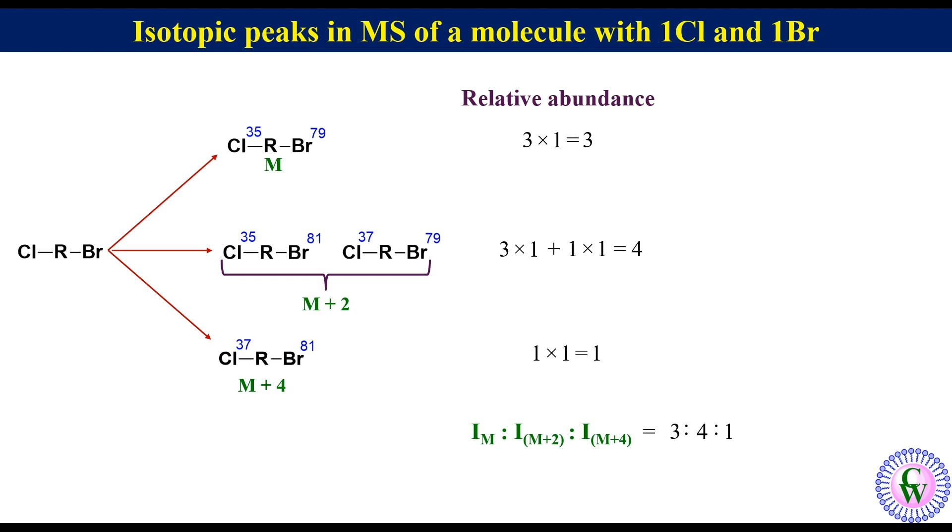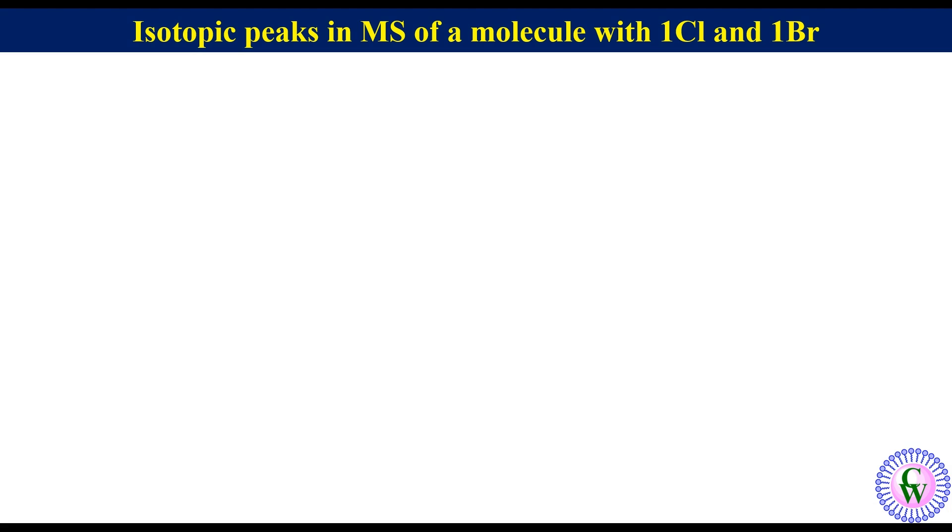Thus, if the mass spectrum of a molecule has M, M plus 2, and M plus 4 peaks with the intensity ratio of 3 to 4 to 1, then it has 1 chlorine and 1 bromine atom in it. For example, 1-bromo-4-chlorobenzene.